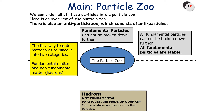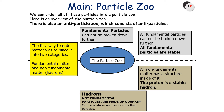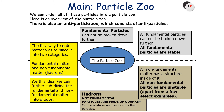As a result, hadrons can be unstable and decay into other particles — all non-fundamental matter has a structure inside it. All non-fundamental particles are unstable, apart from a few select examples. The proton is an example of a stable hadron, and we can use this idea of fundamental particles and hadrons to further subdivide these two categories into smaller groups.